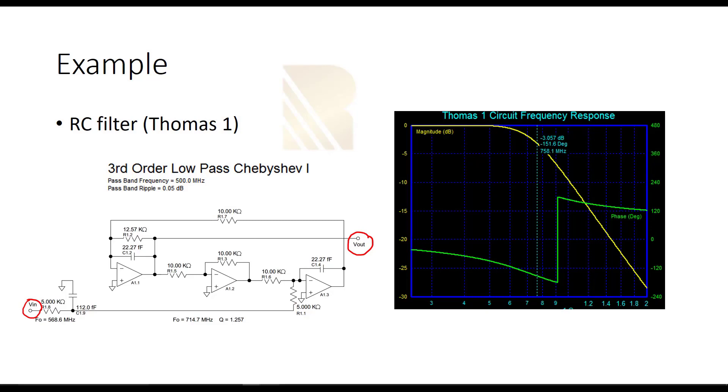As you see, the corner frequency here is 758 MHz. It means that if we have higher frequencies, we will be able to remove them and we will only be passing the frequencies lower than around 700 MHz.